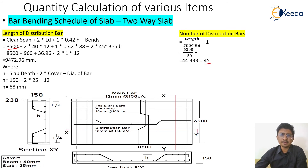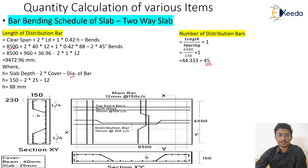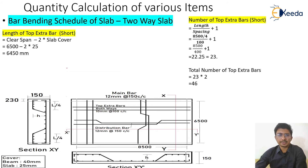The number of distribution bars comes to 45. The h value remains the same since the bar diameter is unchanged. Putting all values together, we now move on to calculate the length and number of the top extra bars.